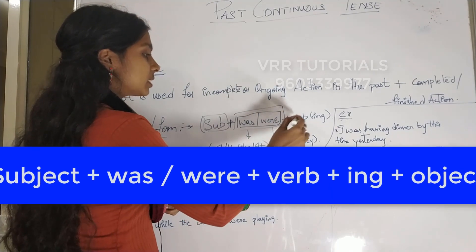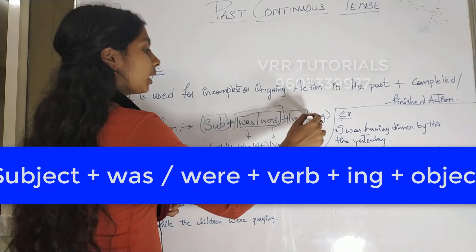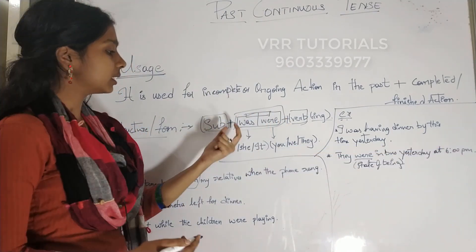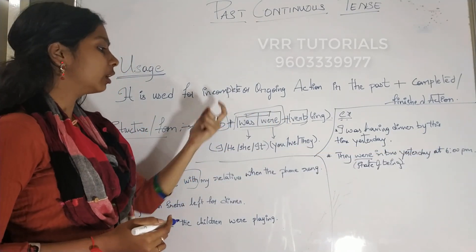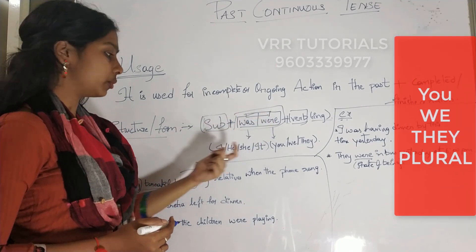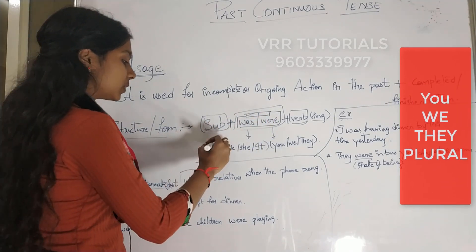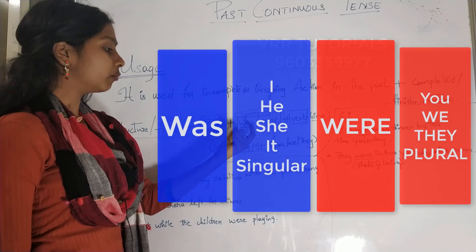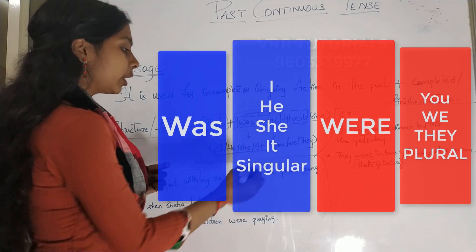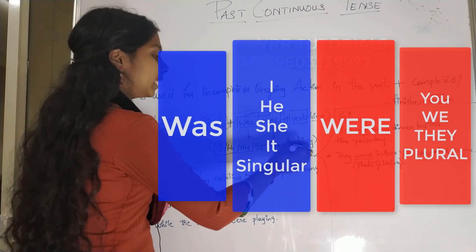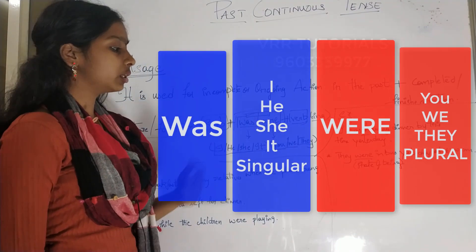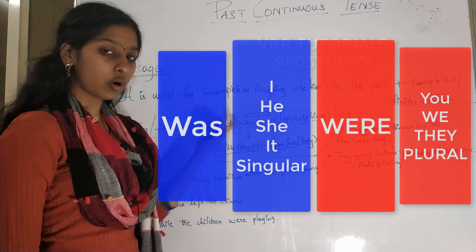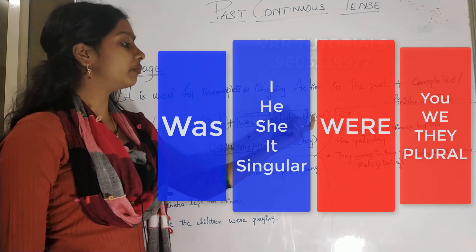Before this, we have to add the verb with -ing. Was and were will change according to the subject. Subject plus was or were, according to the subject, plus verb with -ing.